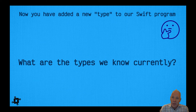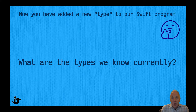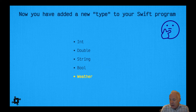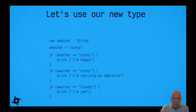What's interesting is that we've now declared a new type in our program. The types we know currently are Int, Double, String, and Bool — all covered in previous modules. But the fifth one we've added now is Weather, a new type we can use throughout our program that we've invented specifically for it.